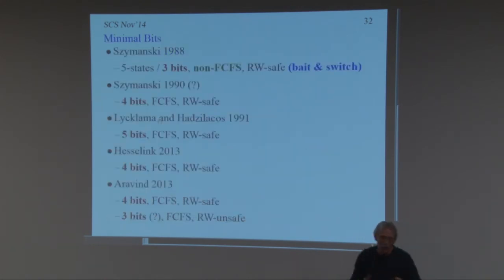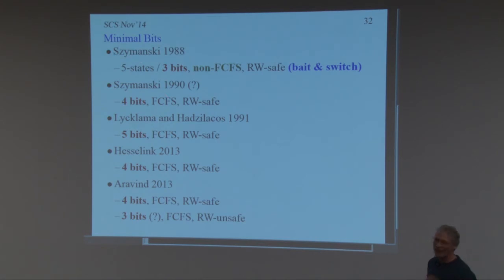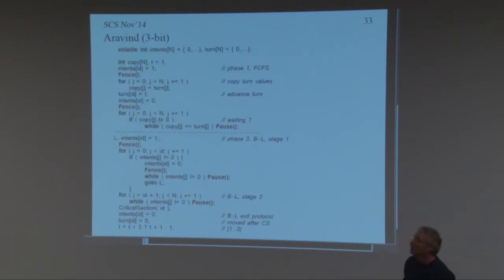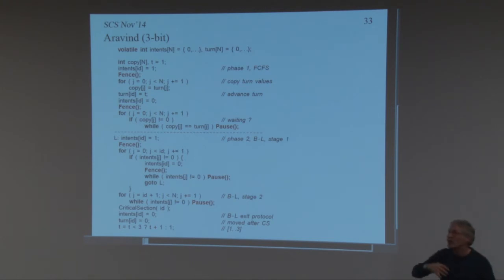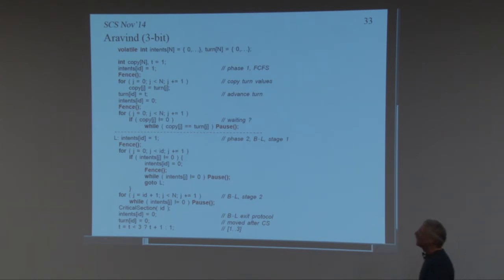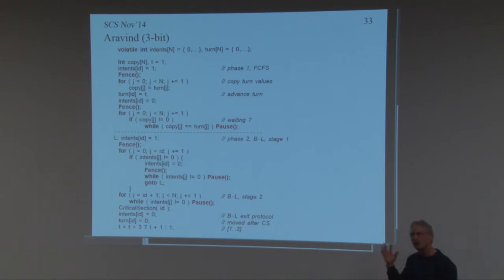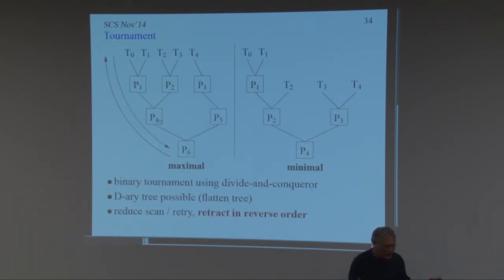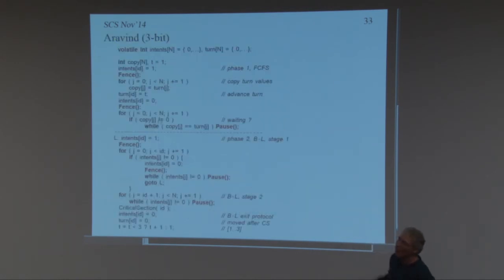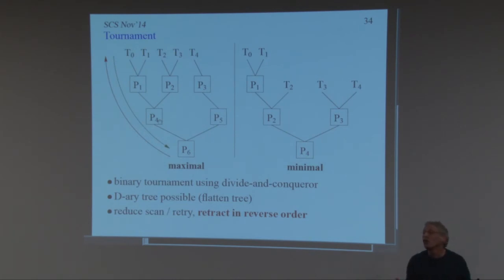Lamport's fast algorithm has a good fast path but a poor slow path, and it has starvation. There are also algorithms using minimal bits — you seem to need about three to five bits. You trade space for time: with so little space, you spend a lot of time checking and re-checking. These don't run fast but work fine if you only have a couple of bits of memory. There's also some funny magic involving copying in these algorithms that's hard to understand.